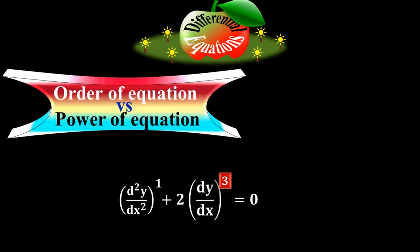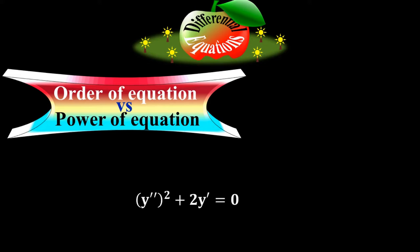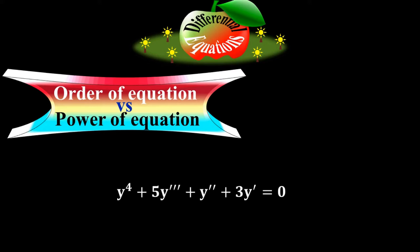Using Lagrange's notation: the maximum derivative term is the second derivative, so the order is second order and the power is 2. For the equation y⁴ + 5y‴ + y″ + 3y′ = 0, the power is not 4. The maximum derivative term is y‴, so it is third order. The power is 1 because y‴ is raised to 1; the 4 is just the power of the simple variable y, not a derivative.